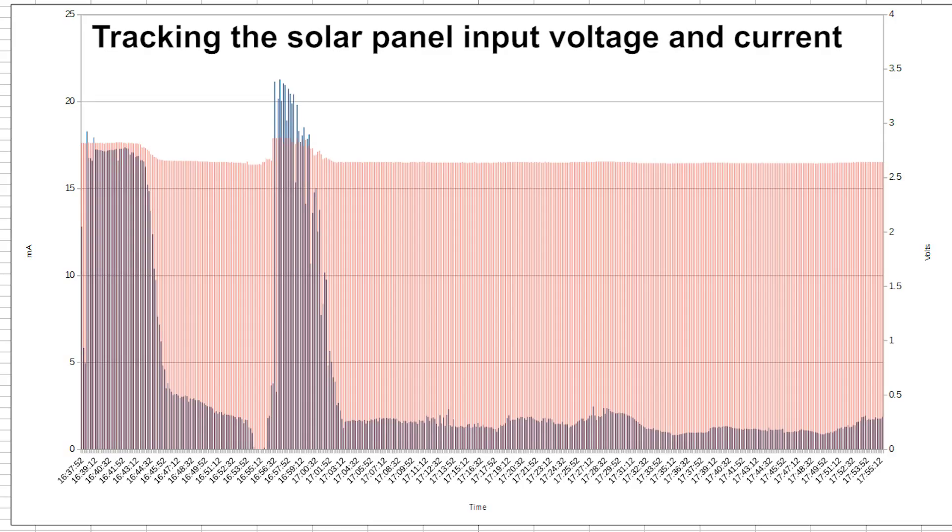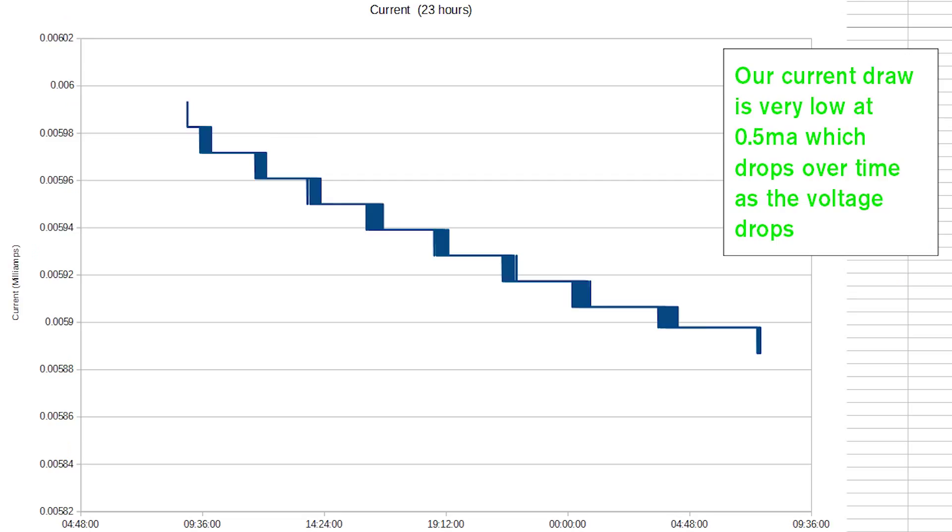So the SunSafe uses 500 to 600 microamps per hour depending on the battery voltage which is great. It means it will last a really long time and it doesn't need to take in a lot of power from the solar panel.